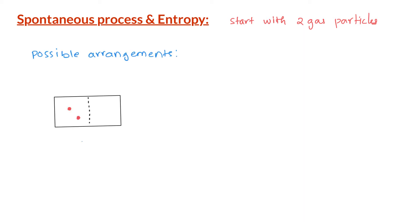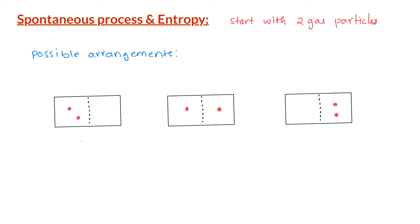Next, let us assume we have two gas particles. When we remove the partition, both gas particles are free to move and they move randomly across the entire container. If we take a snapshot at various time points, we could find both particles on the left hand side, one on each side, or both on the right hand side. These are three possible scenarios.